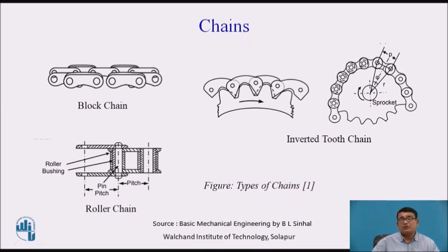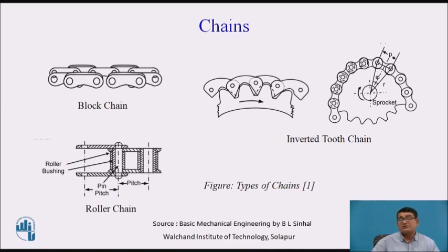So friends, now that you know the types of belts, belt materials, belt drive, and chain drive, think about which is the most favorable power transmission system. We compare belt drive and chain drive: chain is a positive transmission system compared to the belt, because in the belt, friction produces heat, heat causes elongation, elongation increases belt length, and slippage occurs. That does not happen in the chain.